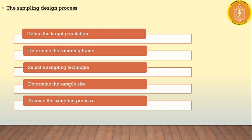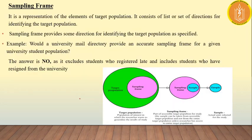This is the sampling design process. First, we define the target population. Then we include the sampling frame. Then we select sampling techniques. Then we determine our sample size — there are two methods for this, qualitative and quantitative. After that, we execute our sampling process.